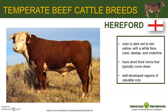Hereford is colored dark red to red-yellow with a white face, crest, dewlap, and underline. Most animals have short thick horns that typically curve down at the sides of the head, but a polled strain is present. The origin of the Hereford has been lost over time but it is generally agreed that it was founded along the border of England and Wales. Herefords are known for their well-developed regions of valuable cuts: the back, loin, and the hindquarters or round.